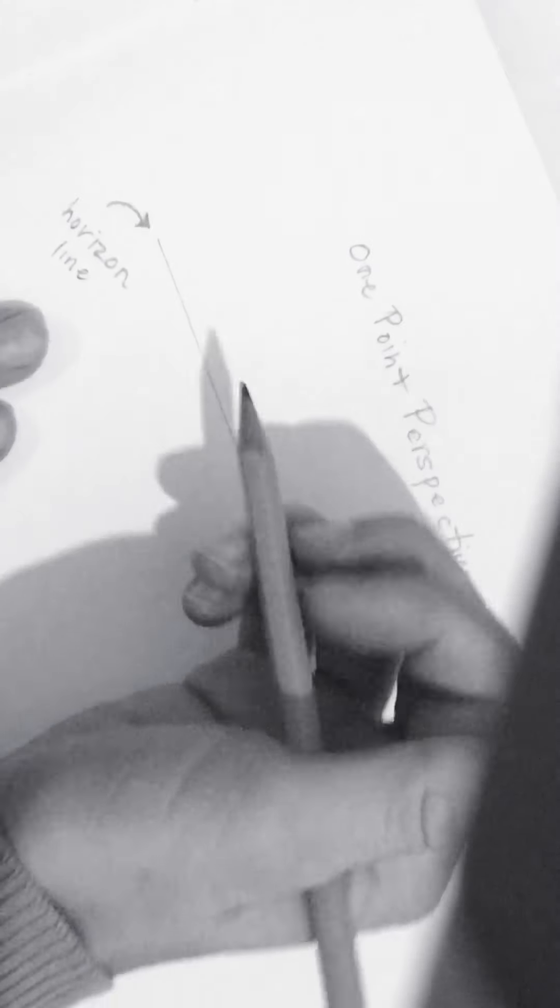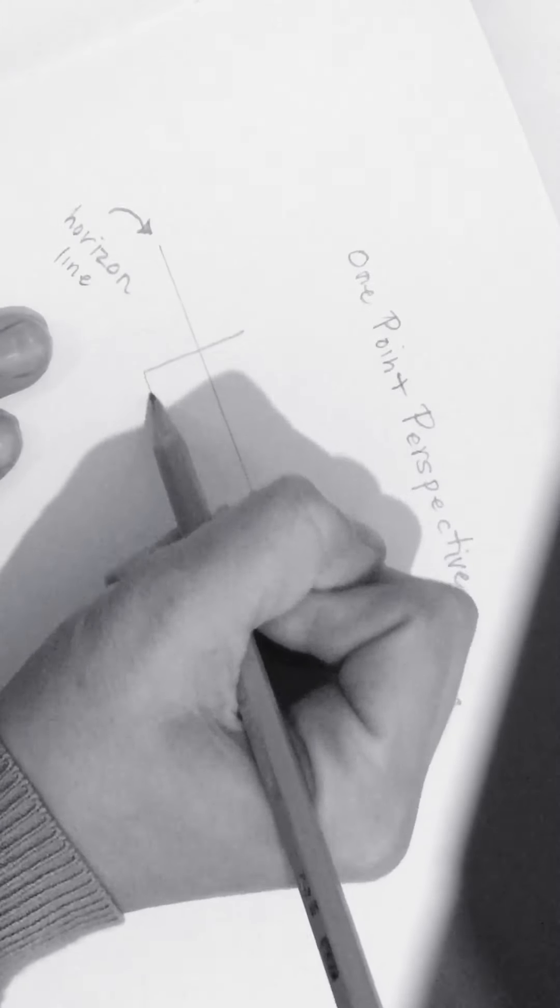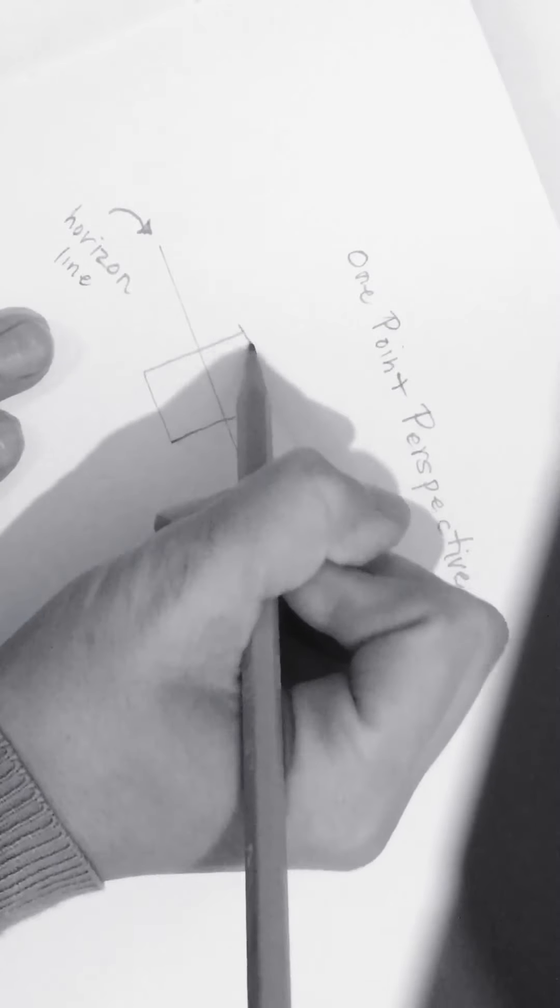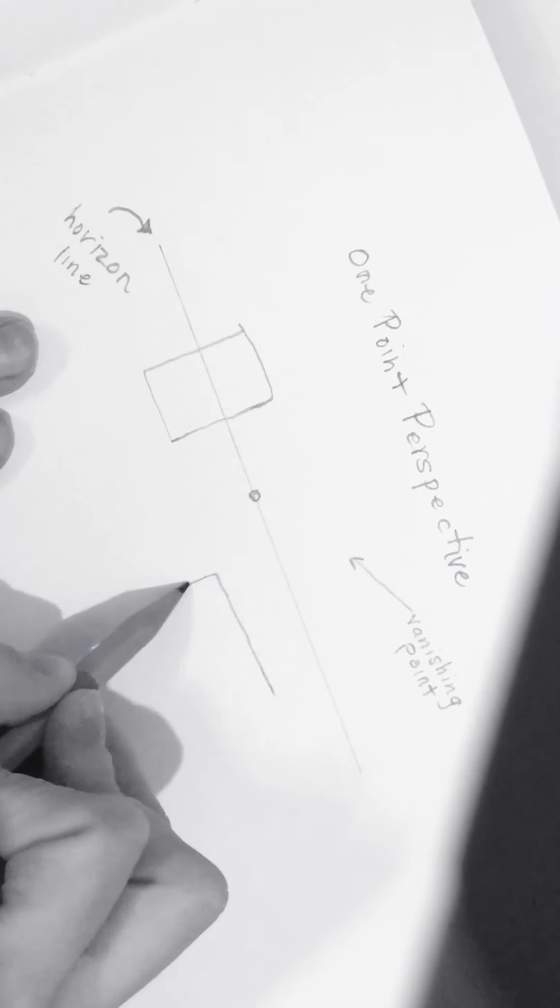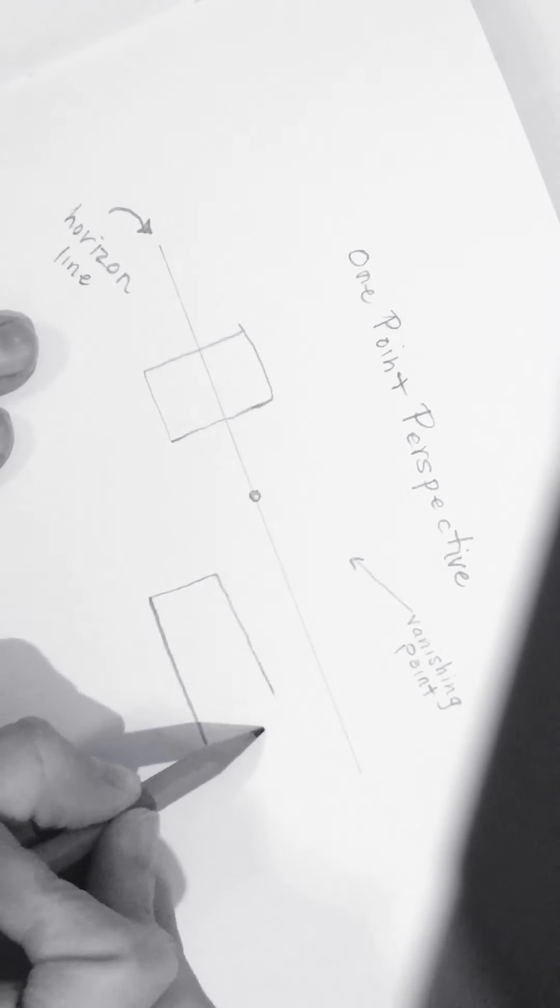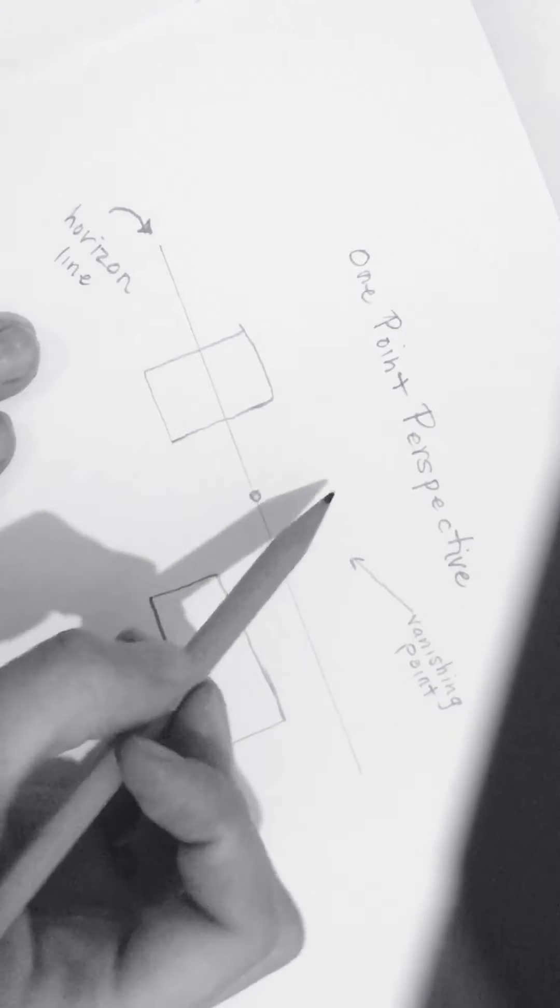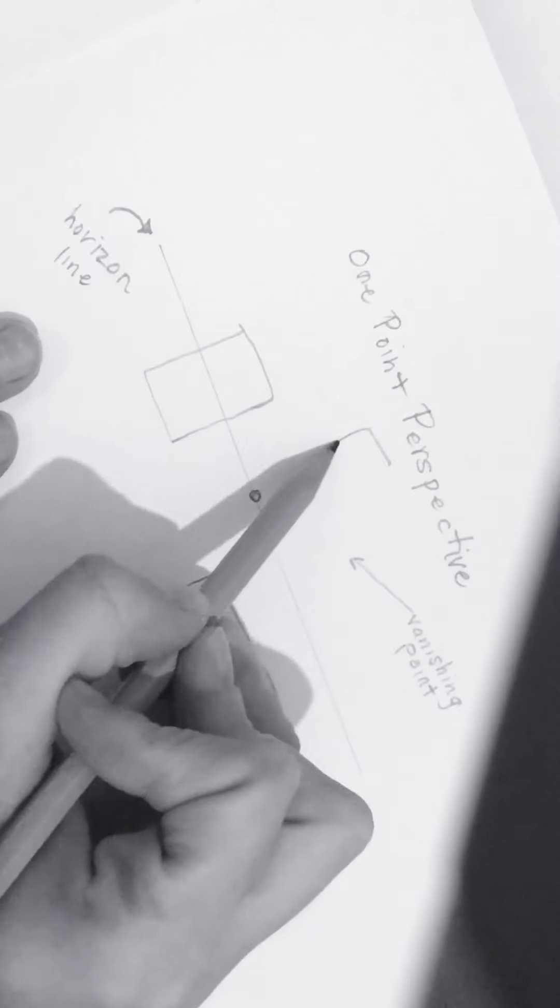Now, for our assignment, I would like you to first draw a box that sits directly on the horizon line. A box or rectangle, any shape that is below the horizon line. And then you will also have a box above the horizon line.